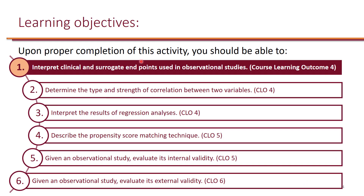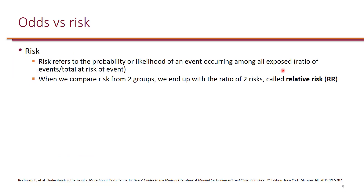The first learning objective is to interpret clinical and surrogate endpoints used in observational studies, which is the course learning outcome number four on the core syllabus. In clinical studies, when we say risk, we're really talking about probability or likelihood of an event occurring among all.